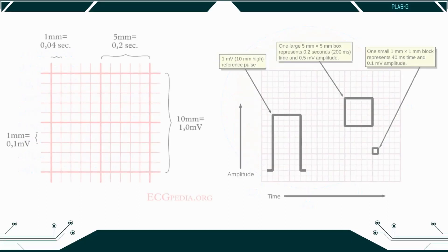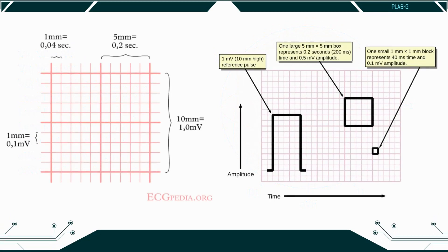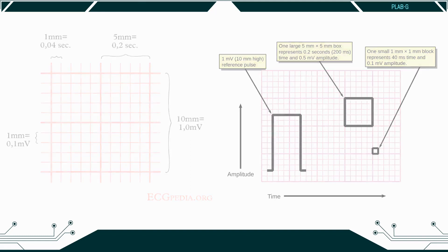The ECG can be broken down into individual components. For the purpose of this, we will look at lead 2. All boxes are based on the assumption that the paper speed is running at 25 mm per second. Therefore, one large square is equivalent to 0.2 seconds and a small square to 0.04 seconds.